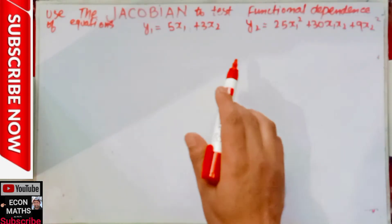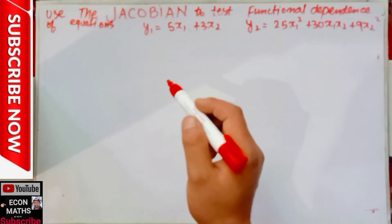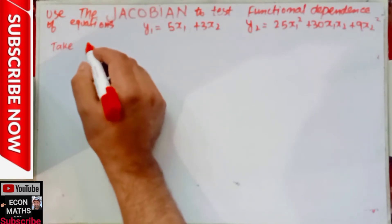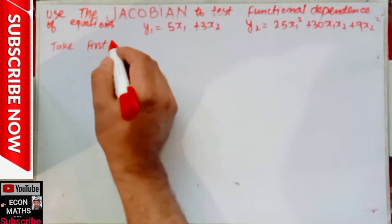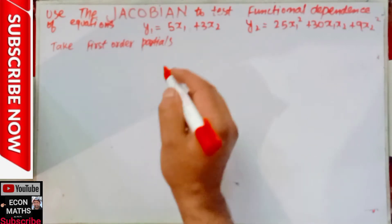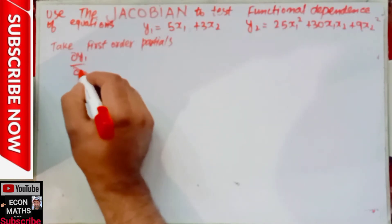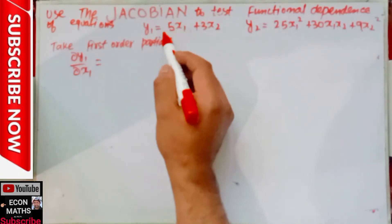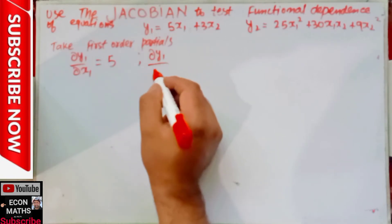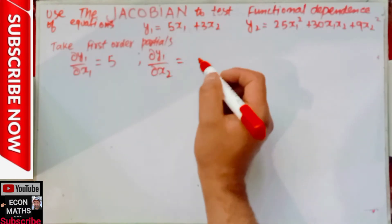First, we take the partial derivatives of these equations with respect to x1 and x2 — that is, the first-order partials. Differentiating y1 with respect to x1: dy1/dx1 = 5. Similarly, dy1/dx2: the derivative of 5x1 with respect to x2 is 0, and the derivative of 3x2 is 3.